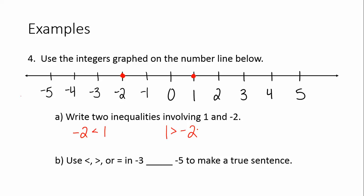For part B, you're to use less than, greater than, or equals in the statement negative 3 blank negative 5, and we need to make this a true sentence. So is negative 3 less than, greater than, or equal to negative 5? It's definitely not equal to negative 5, so we can cross that one off. So now is it less than or greater than?